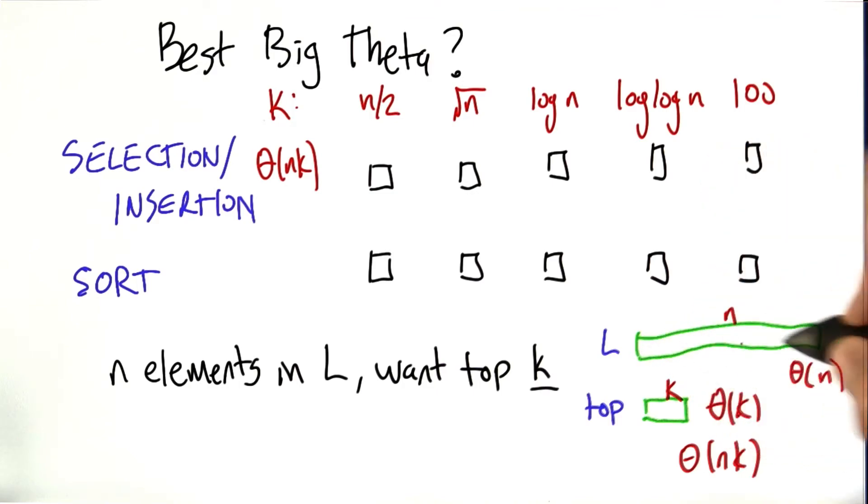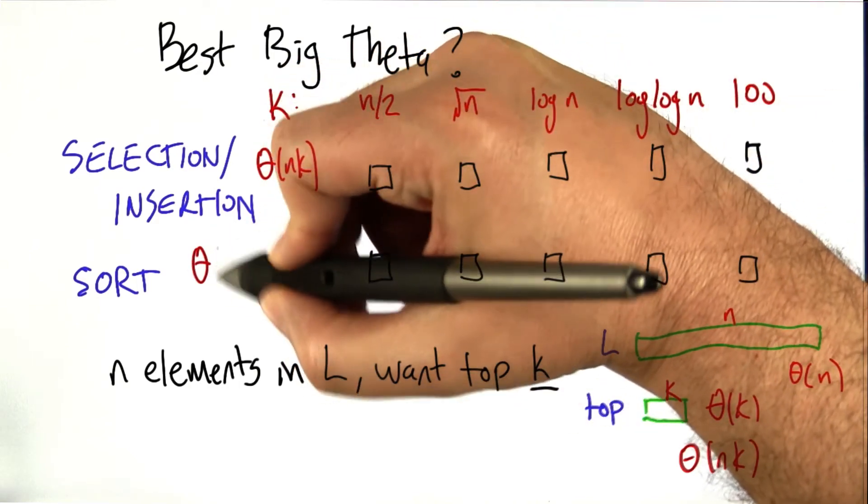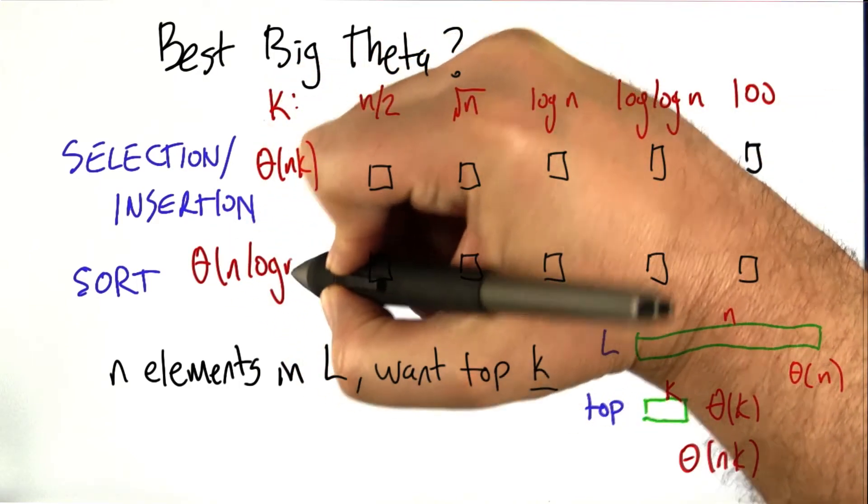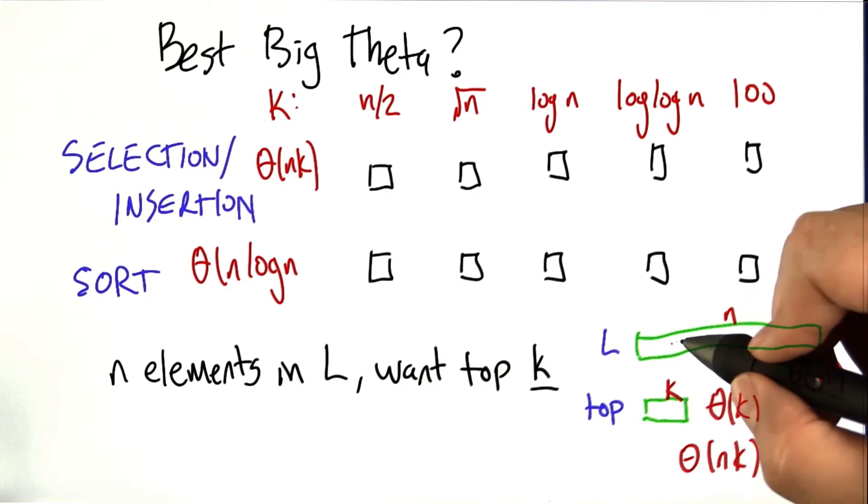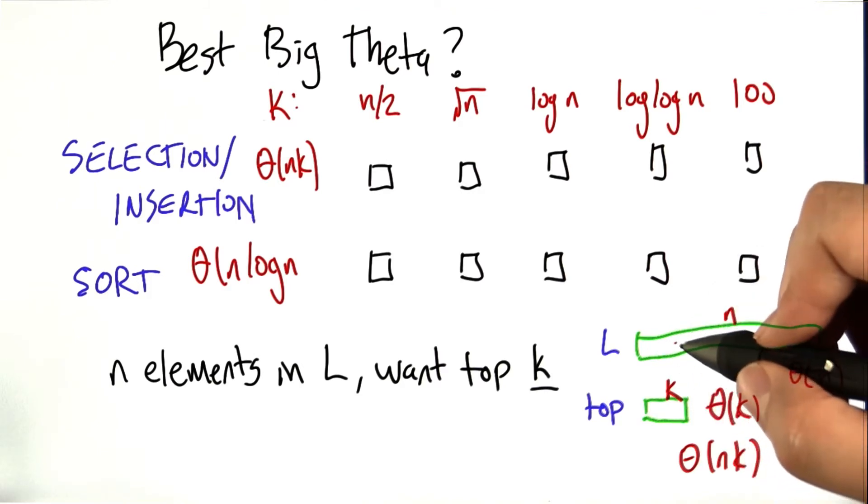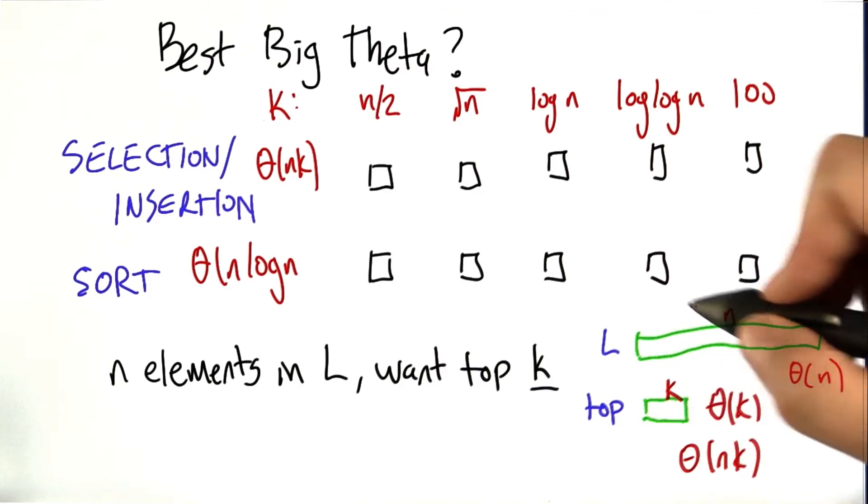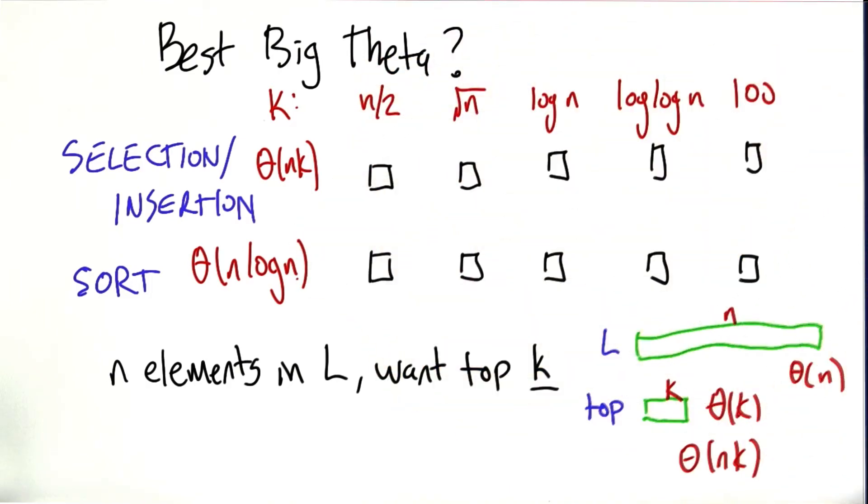Sorting on the other hand sorts this entire list, which I said before was n log n. Then it's kind of done at that point, but you could imagine also looping back through the first k elements. But we basically have them at that point, and k is smaller than n. So asymptotically, that's the whole running time.